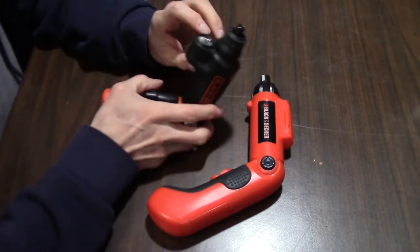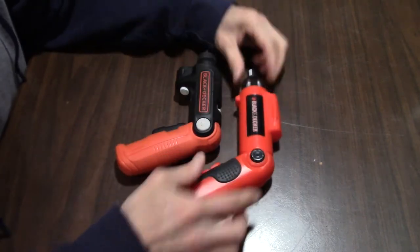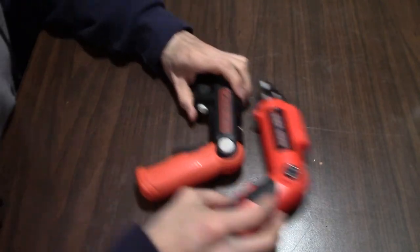This one has a push-on light. This one's light turns on when you press the power button. Let's first measure the RPMs.